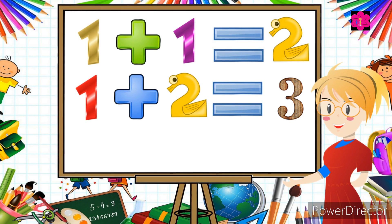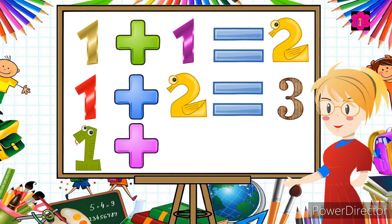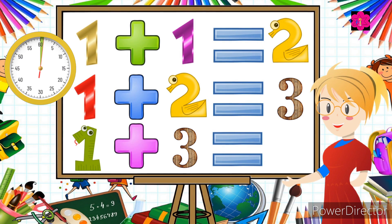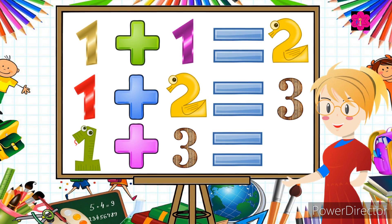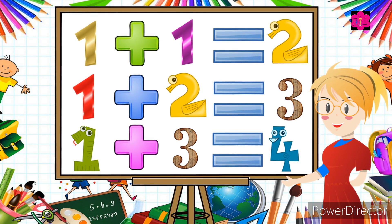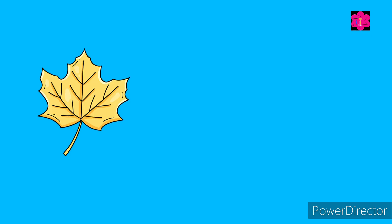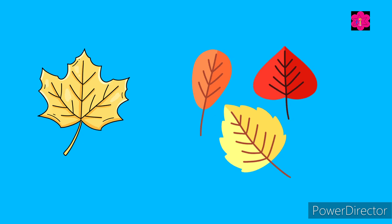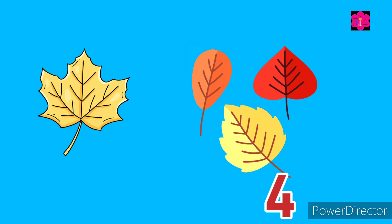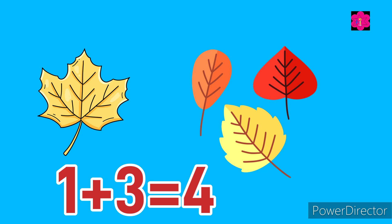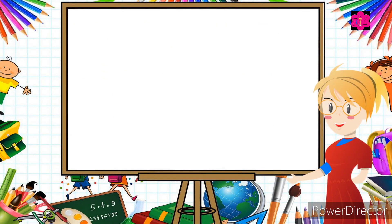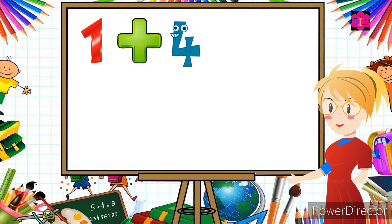Now the next question: one plus three. The correct answer is four! One plus three is equal to four. One leaf is here, now add three more leaves. Count together: one, two, three, four. So one plus three is equal to four.